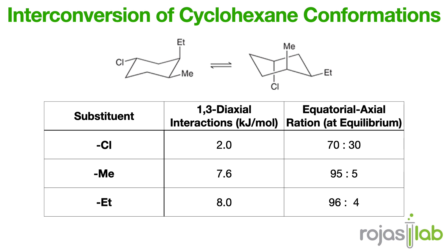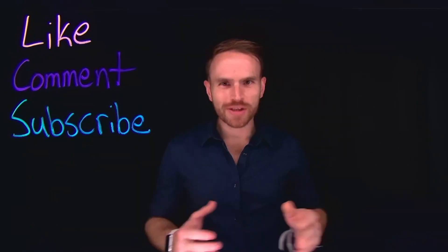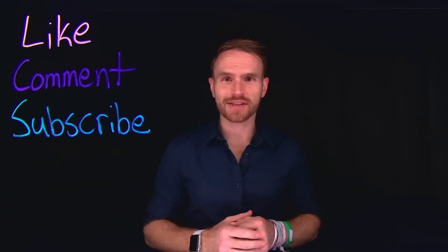Now we can compare the relative energy of these two chair conformations. In the first conformation on the left, there is one ethyl group in an axial position — the energy associated with an axial ethyl group is about 8 kilojoules per mole. In the second conformation, there are two groups in axial positions: a methyl group and a chlorine atom, with a total energy of 7.6 kilojoules per mole plus 2 kilojoules per mole, giving us 9.6 kilojoules per mole. The energy cost is lower for the conformation with the axial ethyl group, meaning the conformation on the left is the lower energy, more stable conformation. If you enjoyed today's video, make sure to like it and drop a comment below if you have any questions. Make sure to subscribe to my channel for more chemistry content, and I'll see you in the next video.